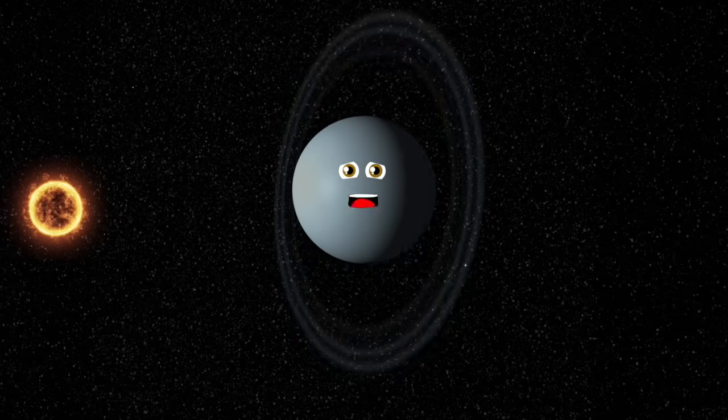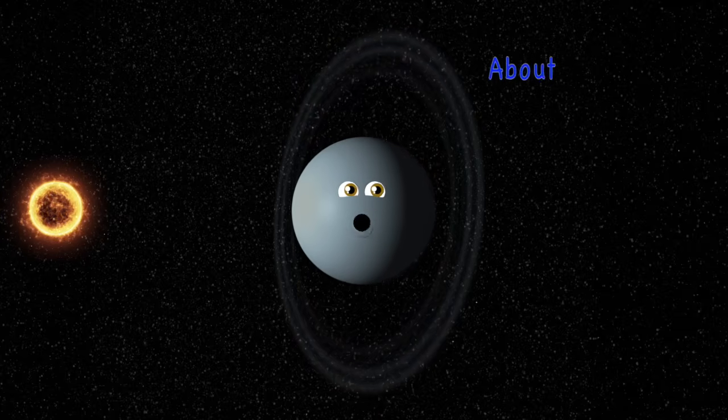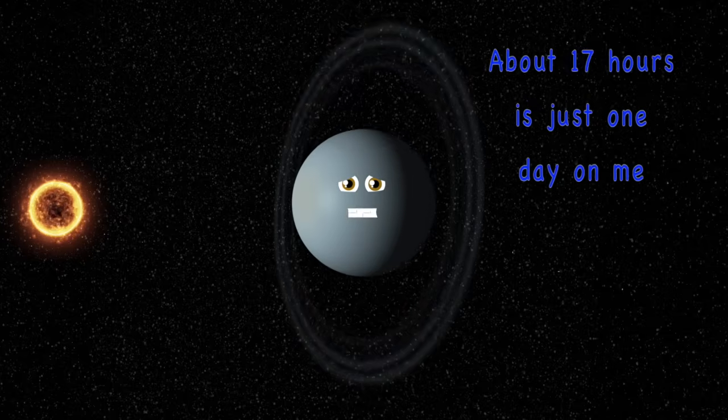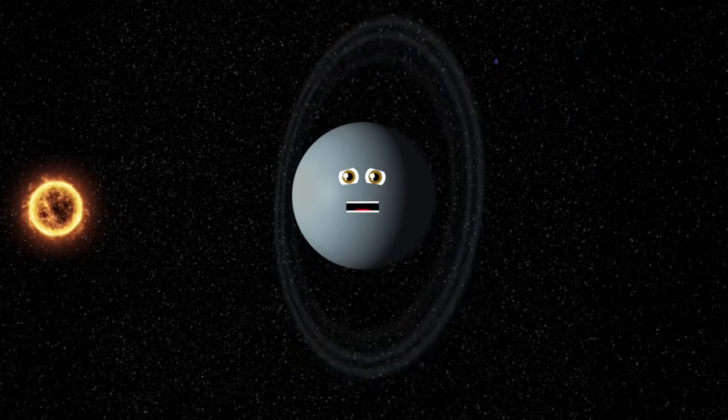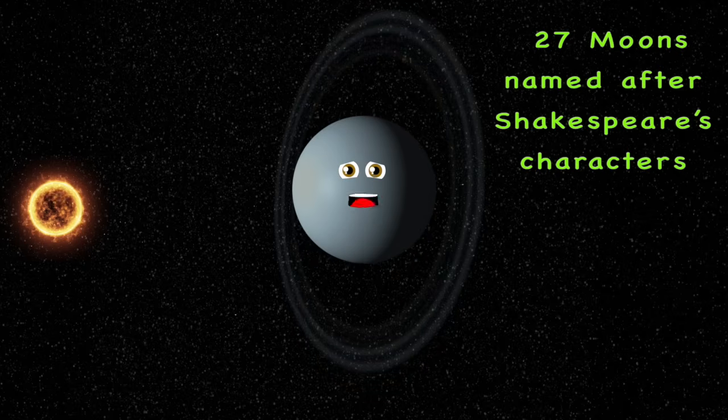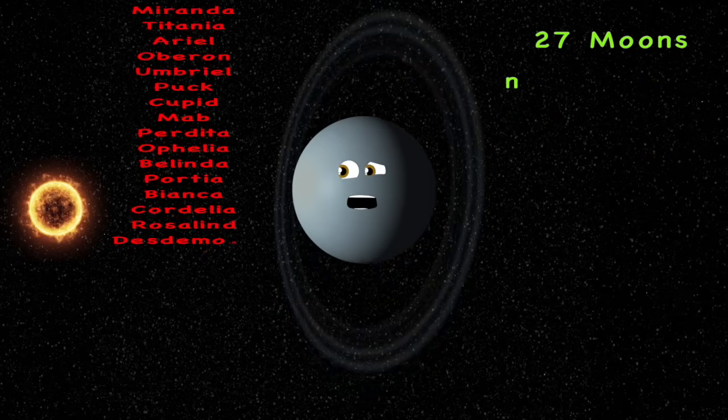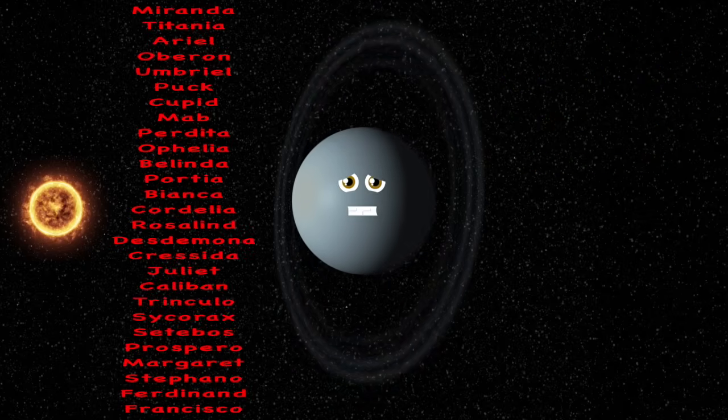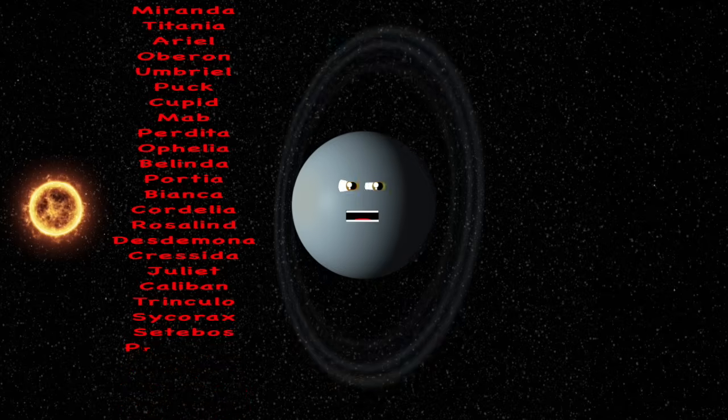I am Uranus, the seventh planet from the sun. 17 hours is just one day on me. I have 27 moons named after Shakespeare's characters, and I have 13 rings that you can clearly see.